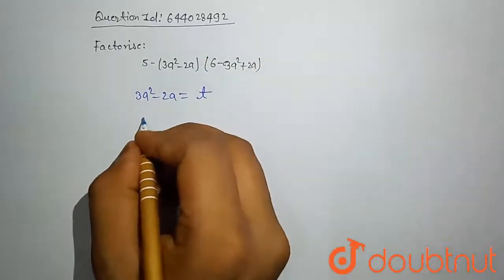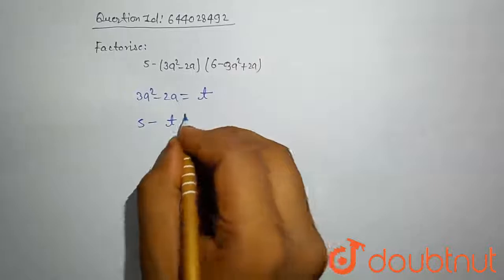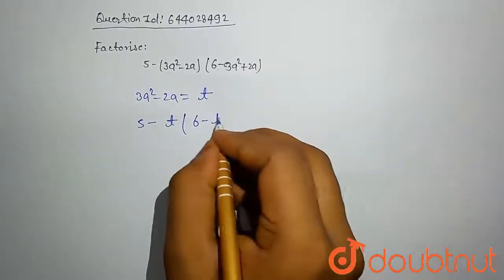Then our equation looks like 5 minus t in brackets 6 minus t.